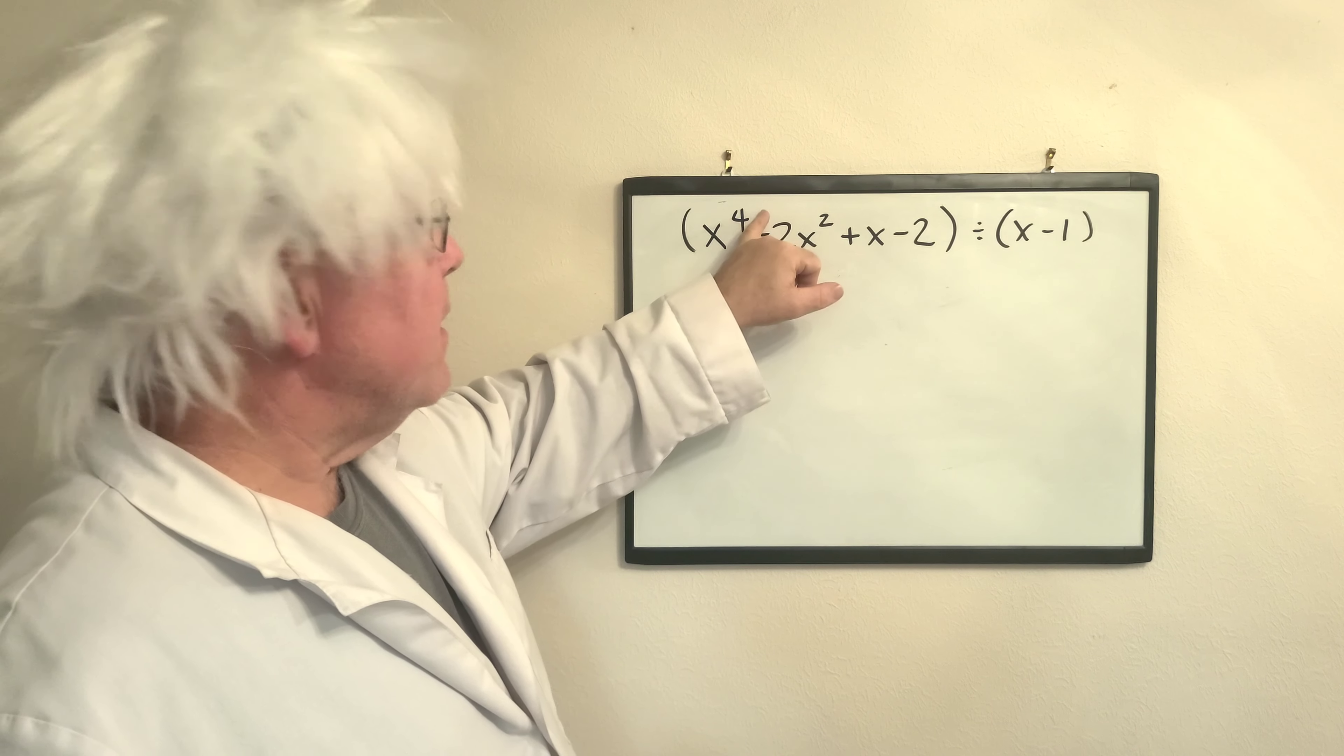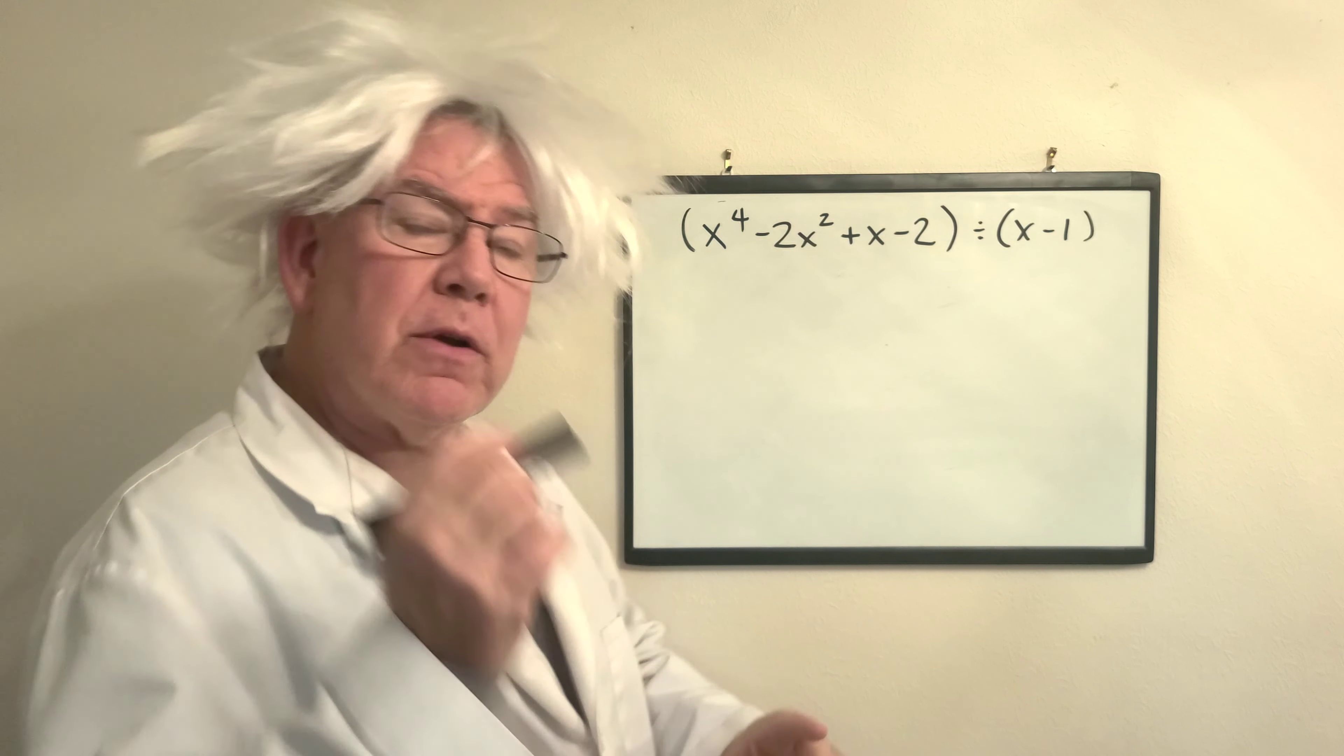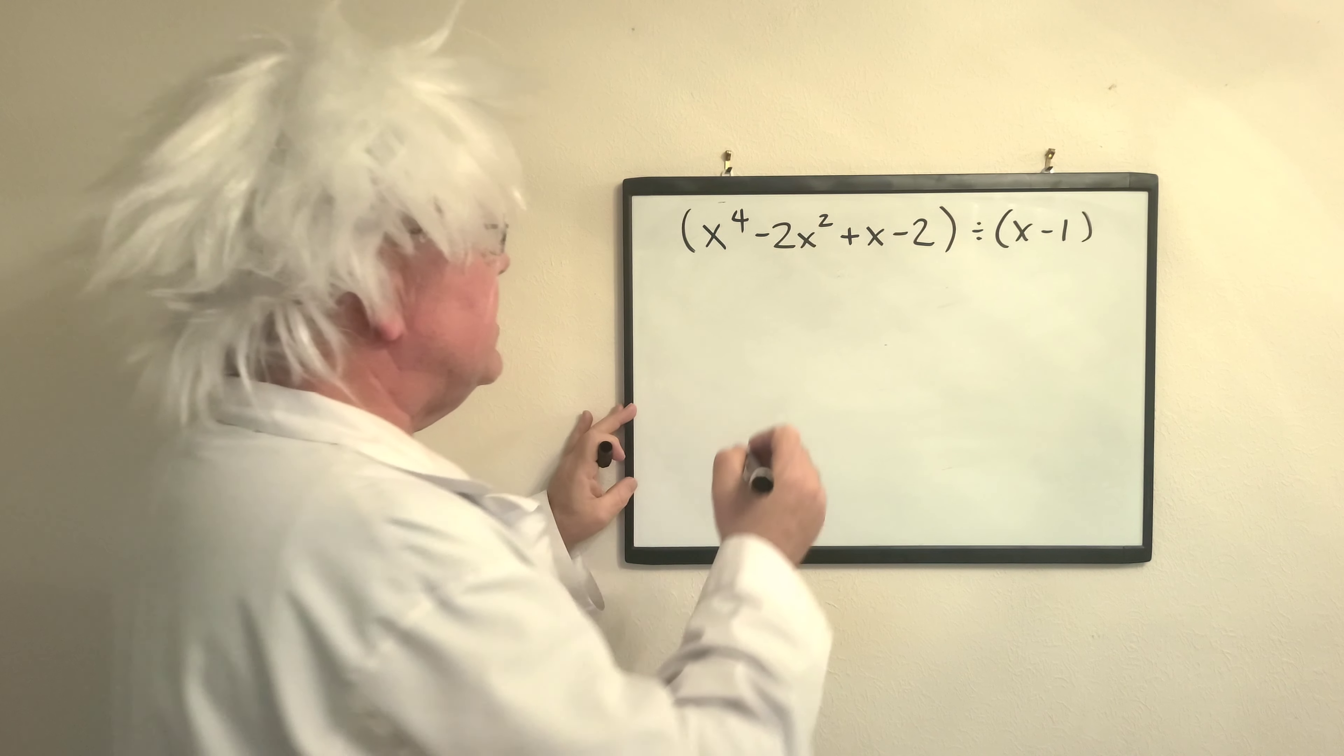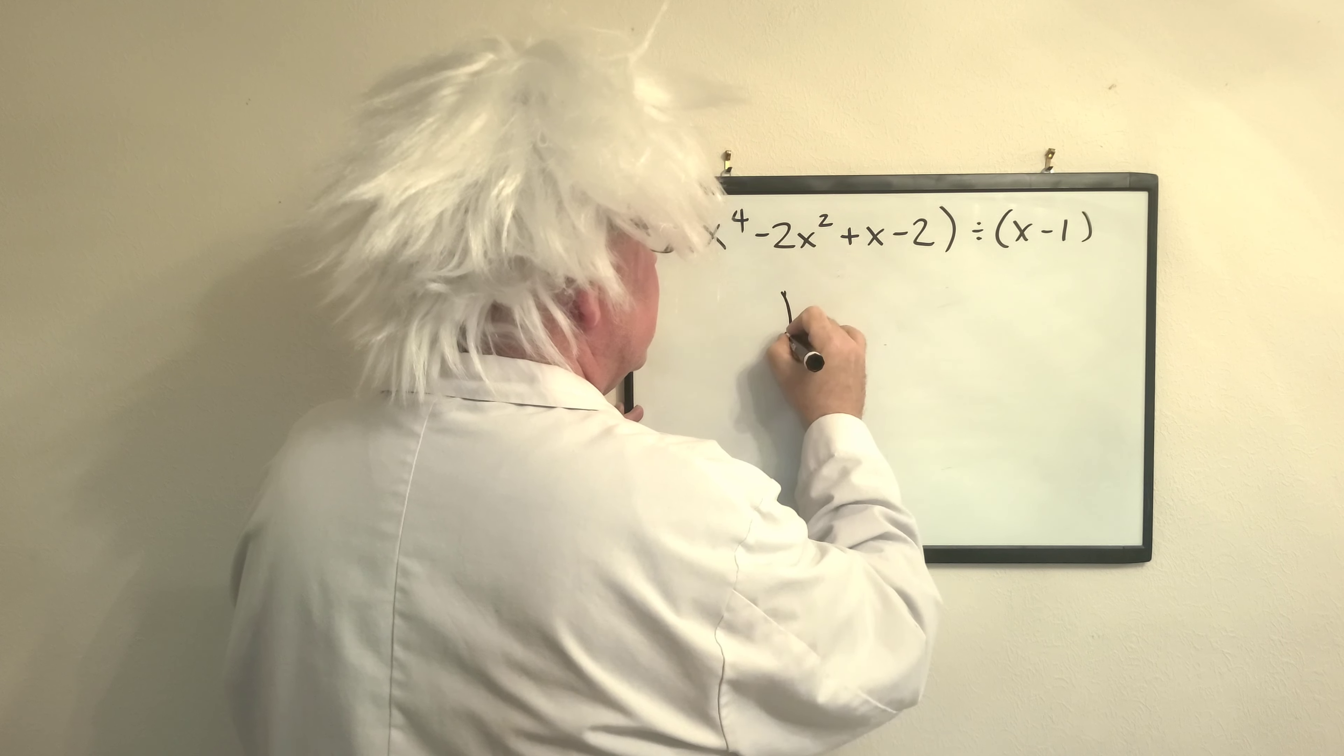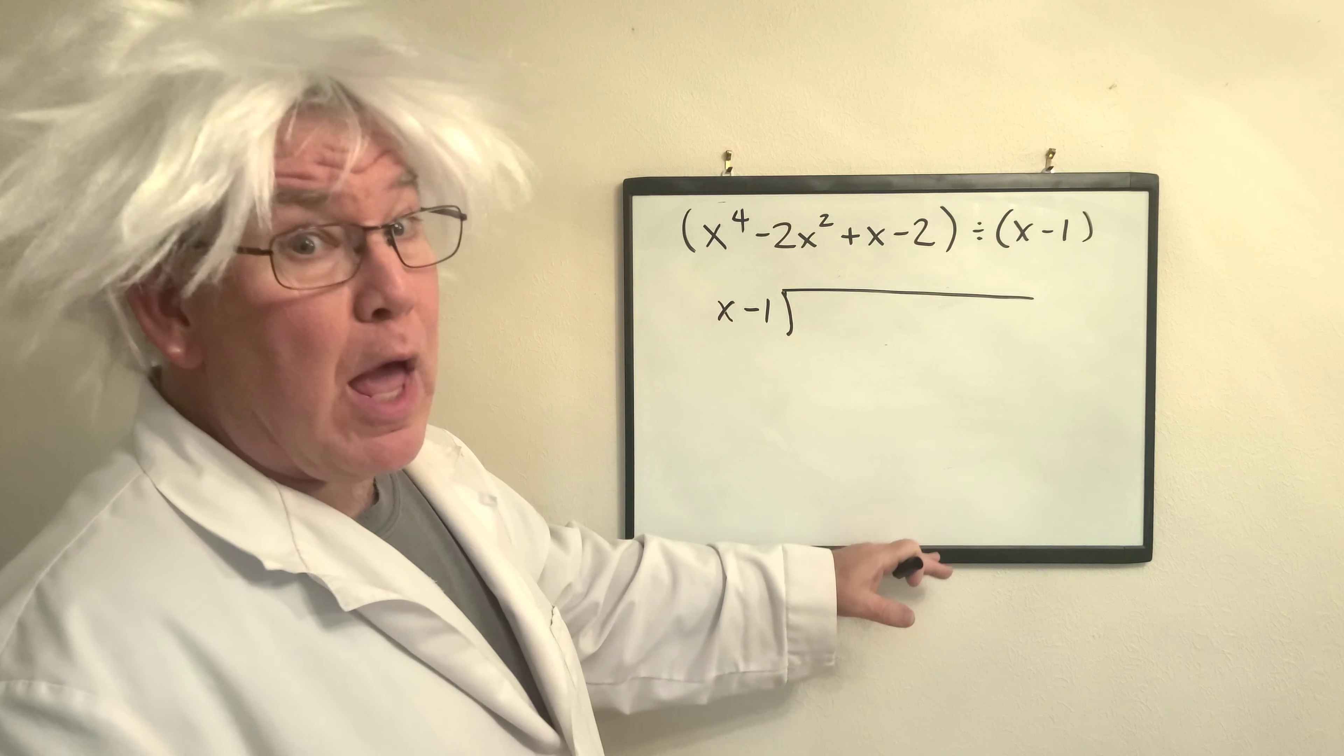We have to make room for this particular term. We don't have anything to the third power. So Professor Algebra is going to show you how we do this. So the first thing we're going to do, what's on the outside. Now this may get a little, it's going to go down.